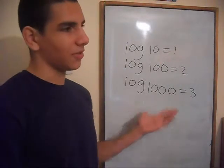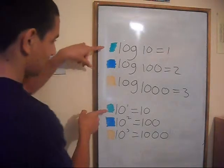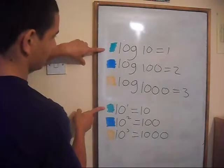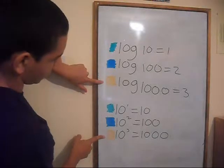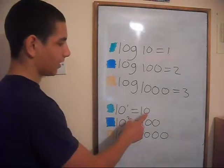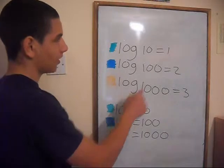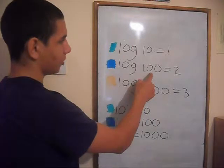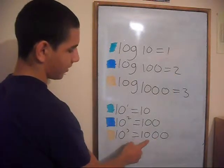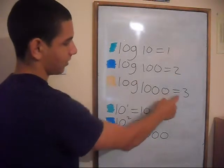Log 10,000 equals 4 and so on. You should be able to see that this sum relates to this sum. This sum relates to this sum. And this sum relates to this sum. Because here we've got a 10 and a 1, a 10 and a 1, a 100 and a 2, a 100 and a 2, a 1000 and a 3, a 1000 and a 3.